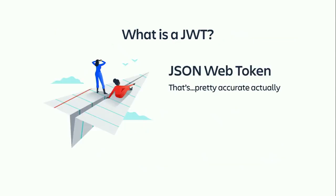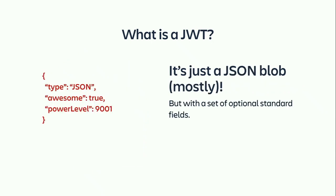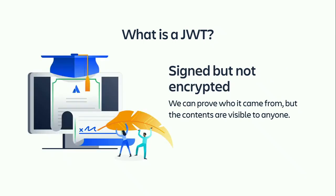It's been like 14 slides and people haven't said what JWT is. It stands for JSON Web Token, which is fairly descriptive. It's an industry standard, so it's not something made by Atlassian — it's actually widely used for various things. It's pretty much just a JSON blob with some extra bells and whistles. Every field in the blob is called a claim, and it can contain anything you like — anything that's valid JSON. An important property is that it is signed, but not encrypted, so it can be verified by anyone, but anyone can also read the contents.